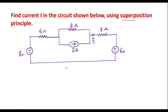Before applying the theorem, I will try to reduce this circuit. As we can see here, we have two voltage sources and one current source which is in parallel with a resistor. I will try to convert this current source into a voltage source so that the simplification will become still easier.